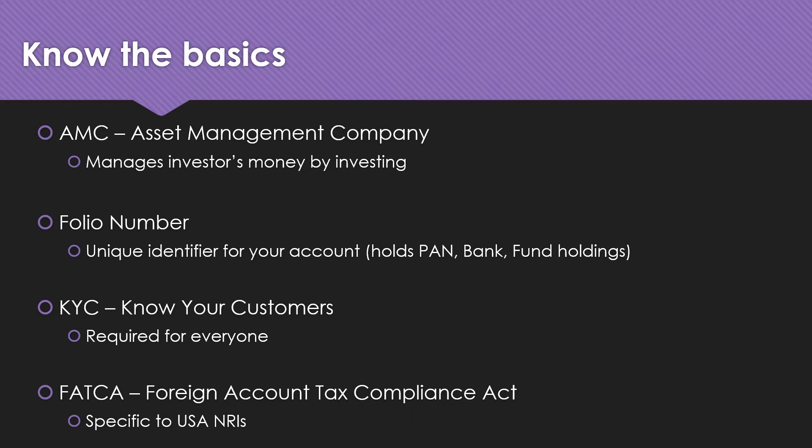For every mutual fund plan there are typically two options available for customers to pick: one is a dividend option and the other is a growth option. If you choose the dividend option, when the asset grows you will be getting dividends periodically, even though it's not mandatory. If you choose the growth option, you don't get money periodically — rather, whenever you sell the units you will be getting the growth value.